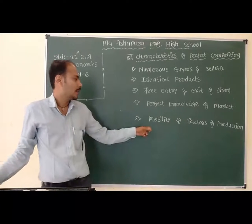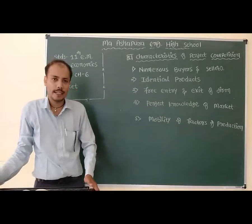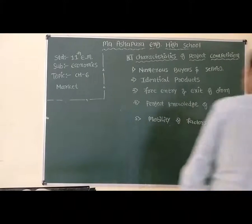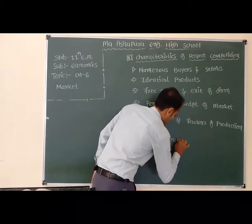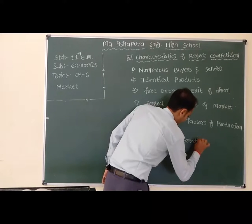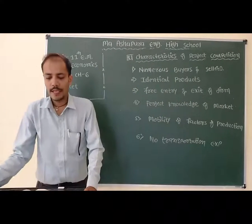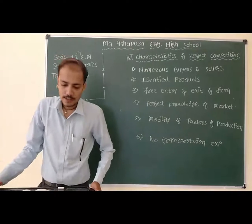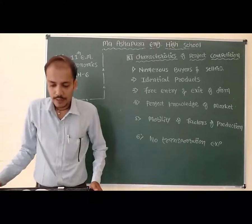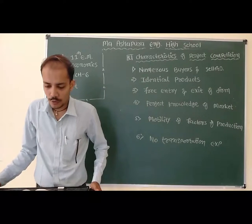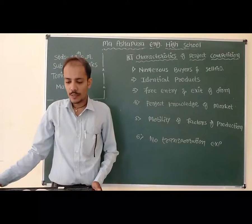Point number 6: No transportation expense. In perfect competition, there are numerous buyers and sellers. The expenses of transportation are negligible compared to total expenses and are not counted. Transportation expense is very small, so in calculation it does not count, meaning transportation cost is effectively zero.